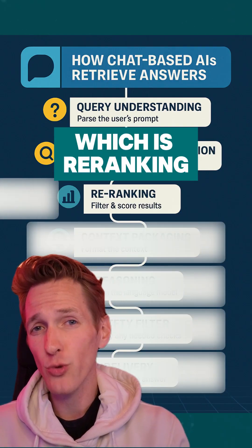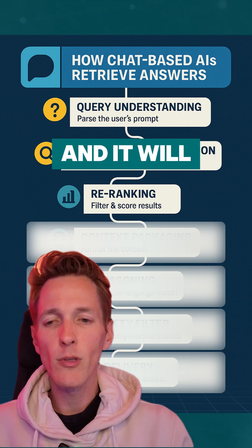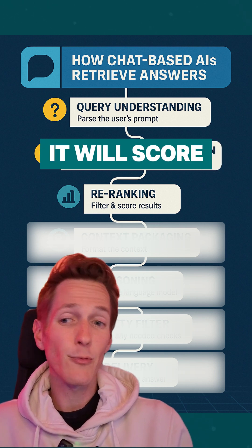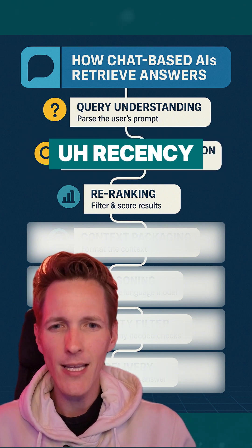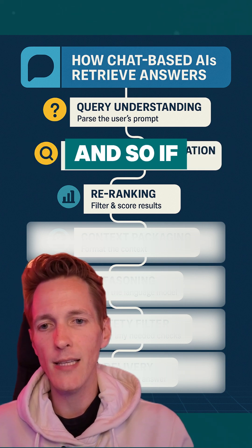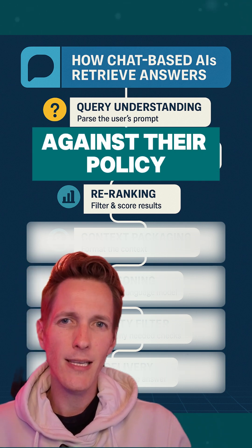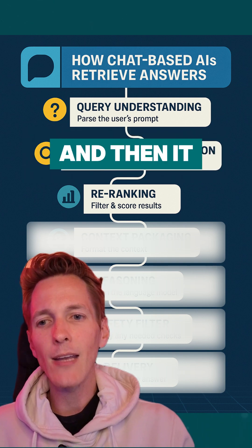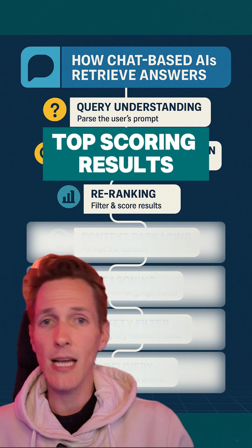This leads us to step three, which is re-ranking. It takes all the data it got from the web and starts to analyze it again. It will re-rank things and score candidates for factors like authority, recency, and policy compliance. These apps have their own built-in policies, so if something in the results goes against their policy, it might get a lower score. Then it filters out the lower-scoring results and keeps the top-scoring ones.